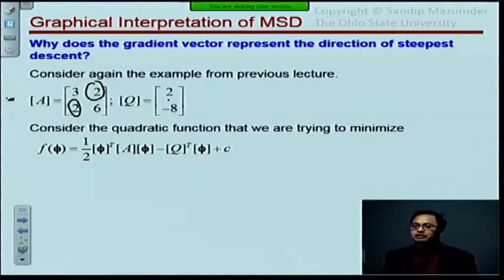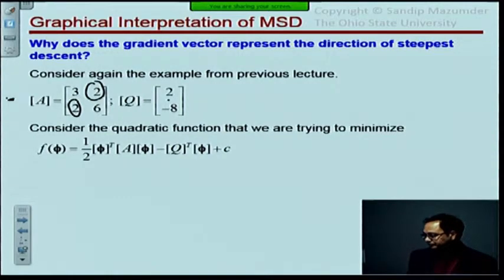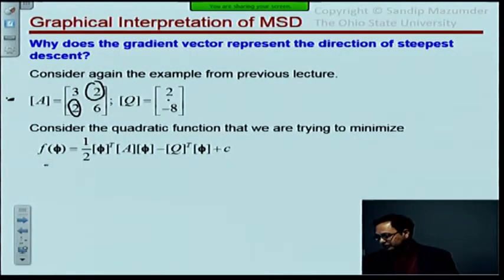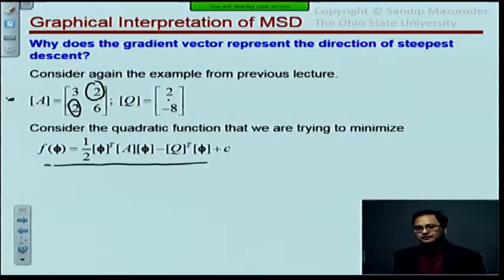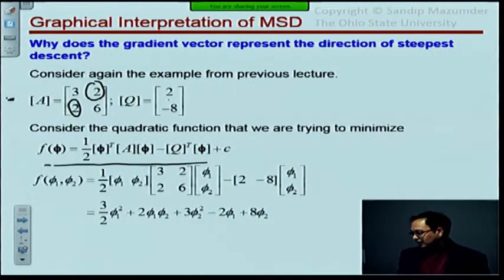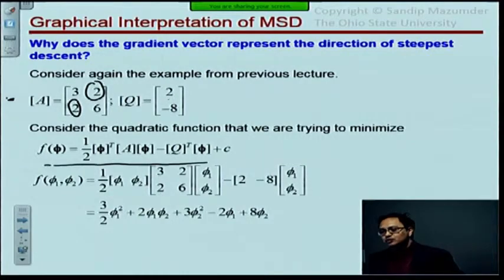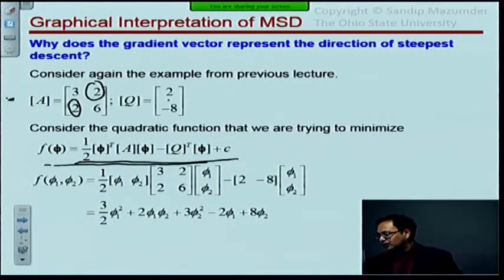Here was our quadratic function that we constructed and minimized. If I now write this out for two independent variables, what I'm showing you here is basically expanding this guy out. So phi transpose is phi_1, phi_2 written as a row matrix. Then here's your A matrix and then this is again your phi. This is now a column vector or a column matrix.